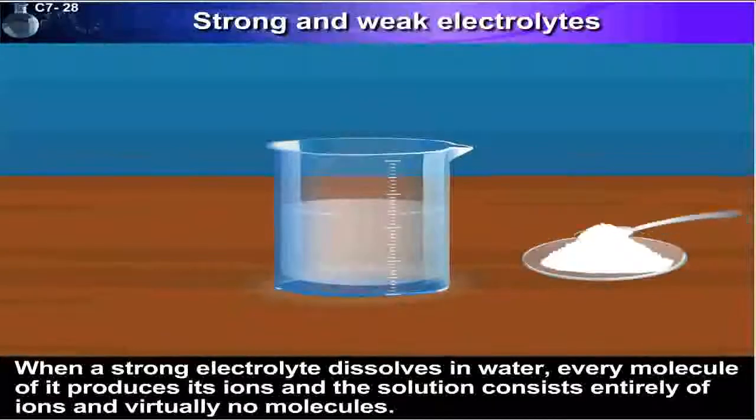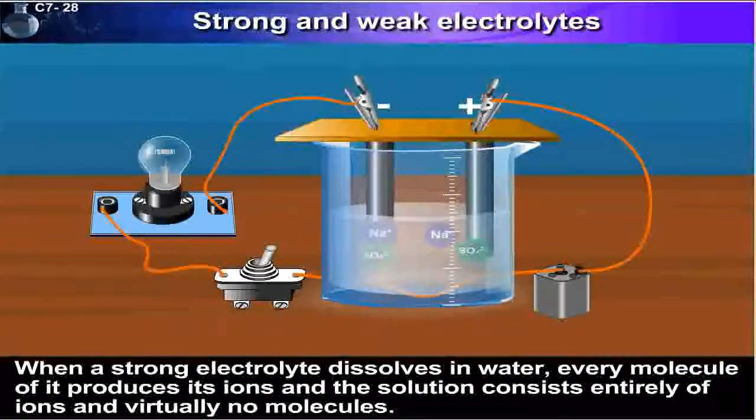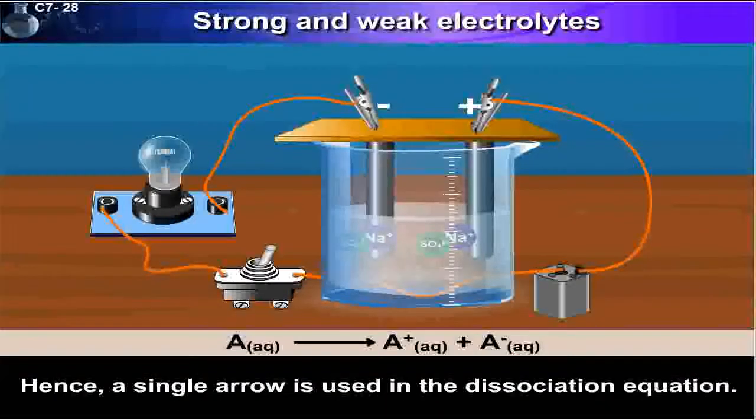When a strong electrolyte dissolves in water, every molecule of it produces its ions, and the solution consists entirely of ions and virtually no molecules. Hence, a single arrow is used in the dissociation equation.